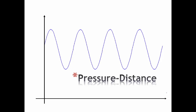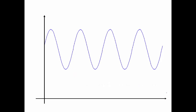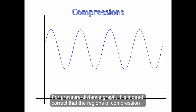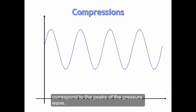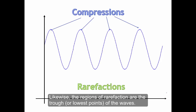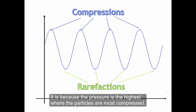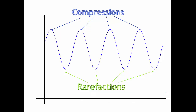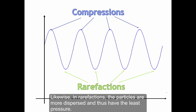We will talk about the pressure-distance graph first. For a pressure-distance graph, it is indeed correct that the region of compression corresponds to the peaks of the pressure wave. Likewise, the region of rarefactions are the trough or the lowest point of the waves. This is because the pressure is highest where the particles are most compressed, which is compression. In rarefaction, the particles are more dispersed and thus have the least pressure.